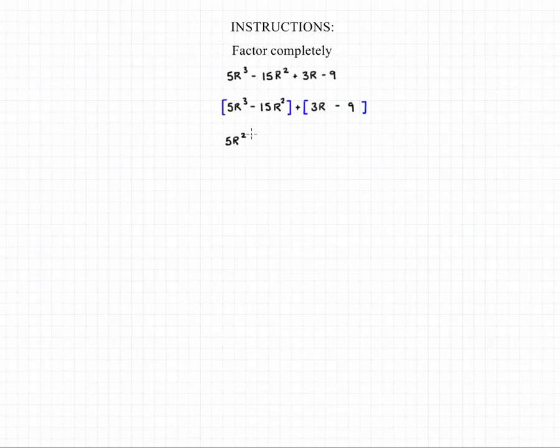We're then going to factor out those factors. We'll take out the 5r², which will leave us with r - 3. Adding that to our second set factored out, which is the 3 factored out, leaves us with another r - 3.